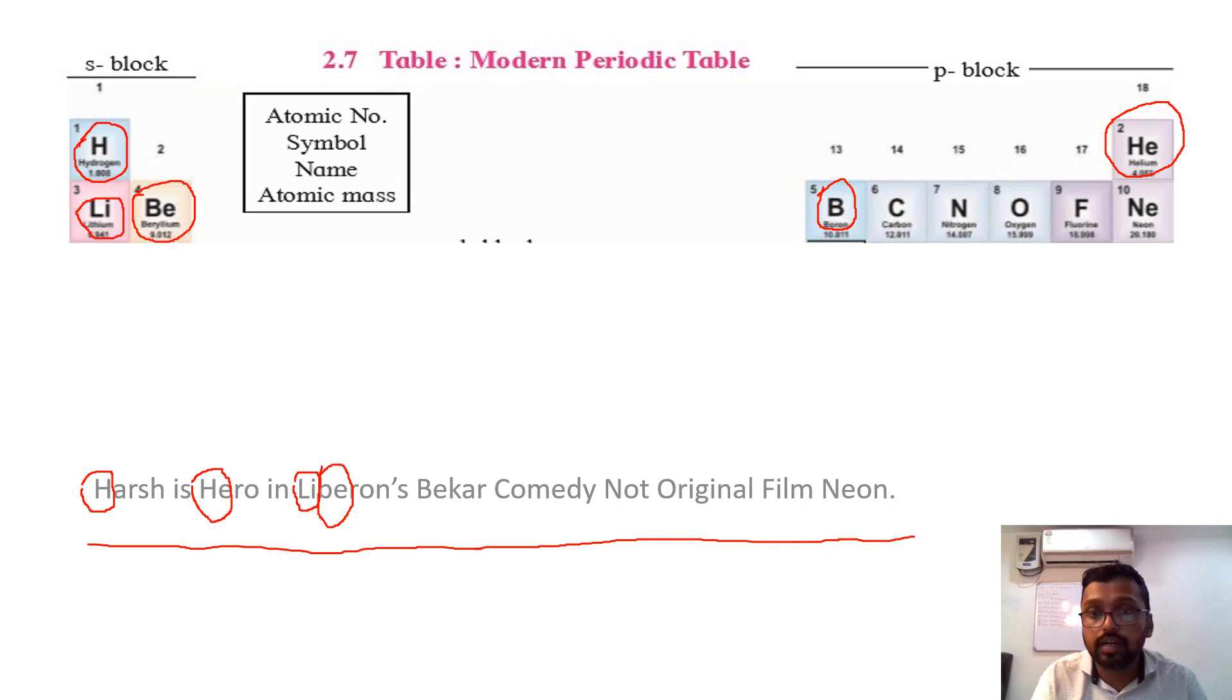I remember saying BCNOF, but BCNOF this story in the form of BKR comedy. BKR - B for boron, C carbon, not N nitrogen, O oxygen, not original, F fluorine. And basically original film, Neon. The name is neon Ne.